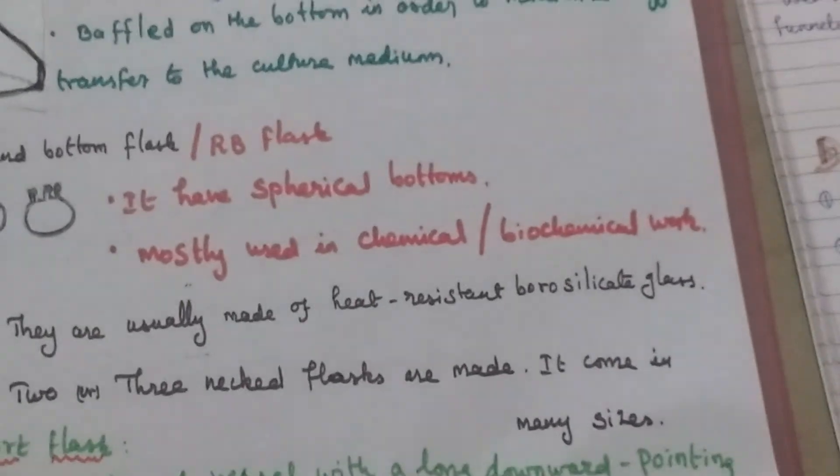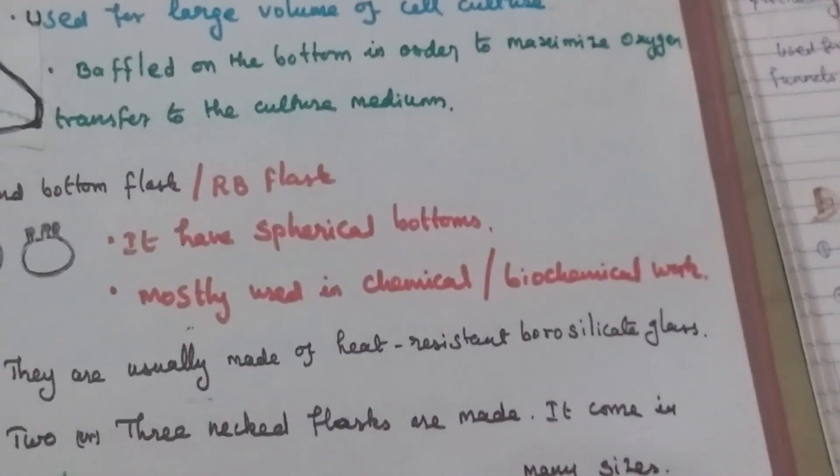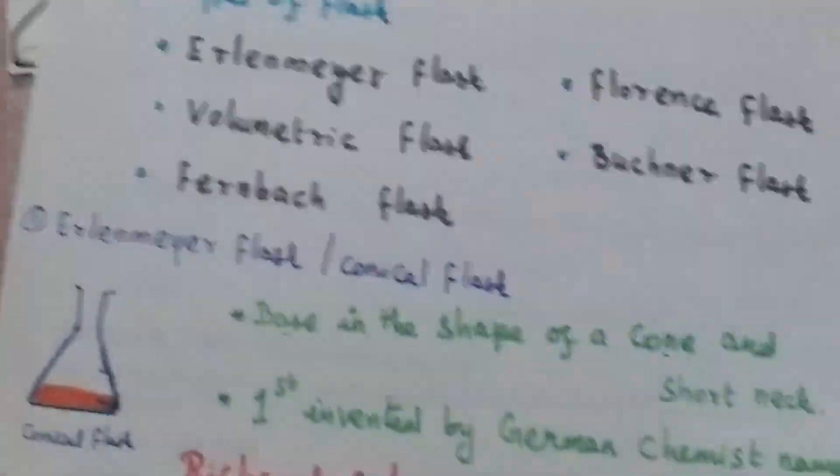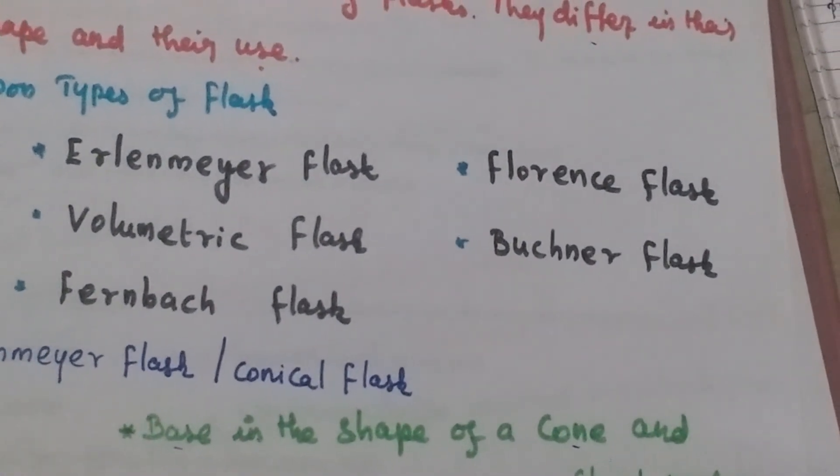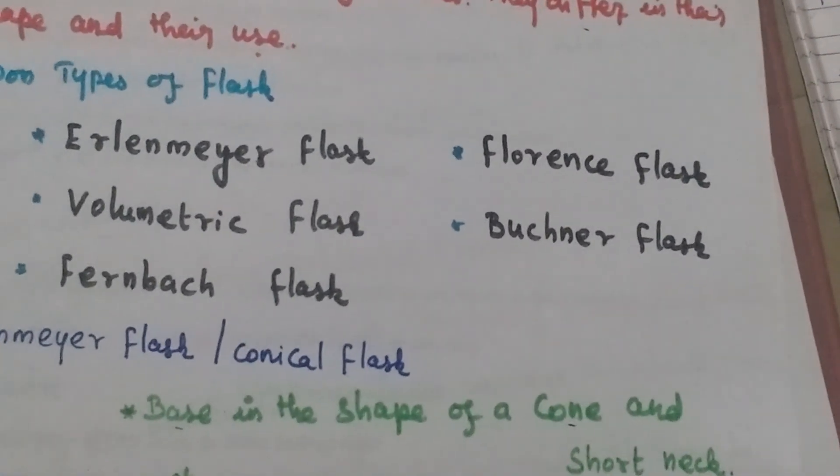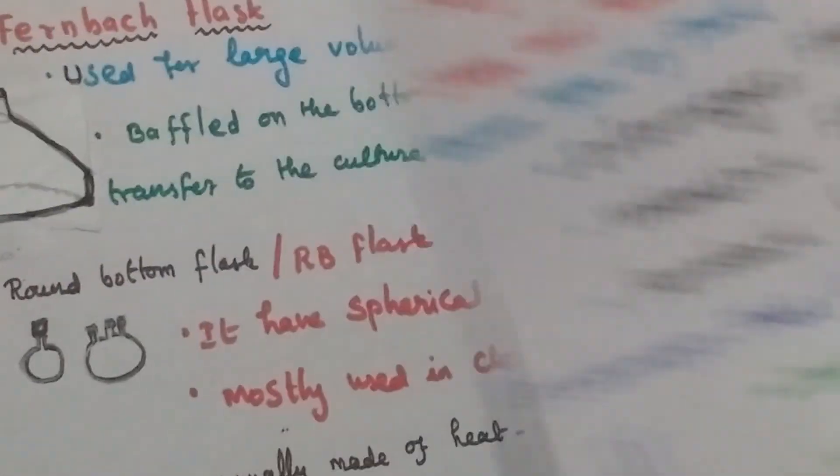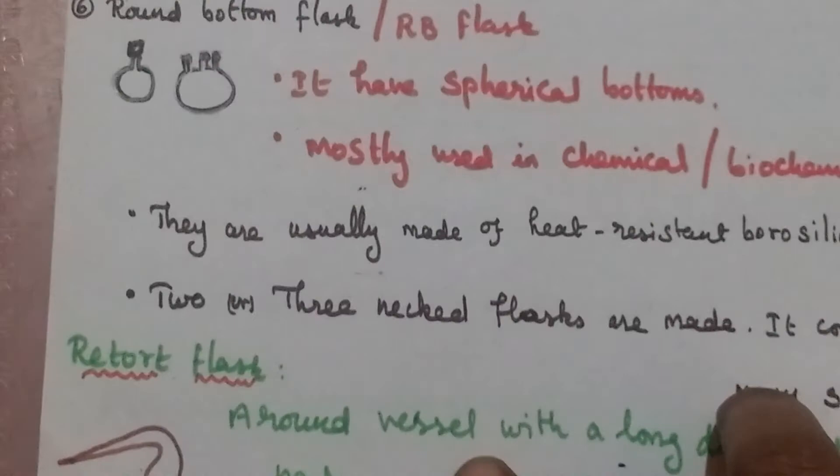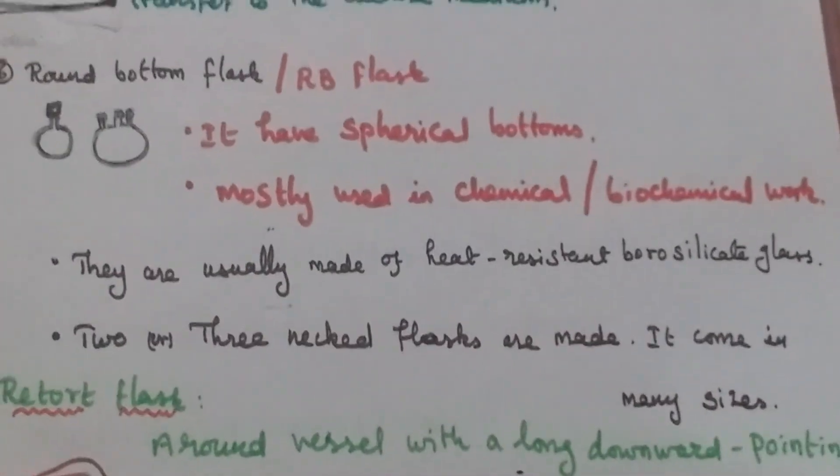In this video we discussed different types of flasks: Erlenmeyer flask, volumetric flask, Florence flask, Buchner flask, Fernbach flask, round bottom flask, and retort flask. Thanks for watching.